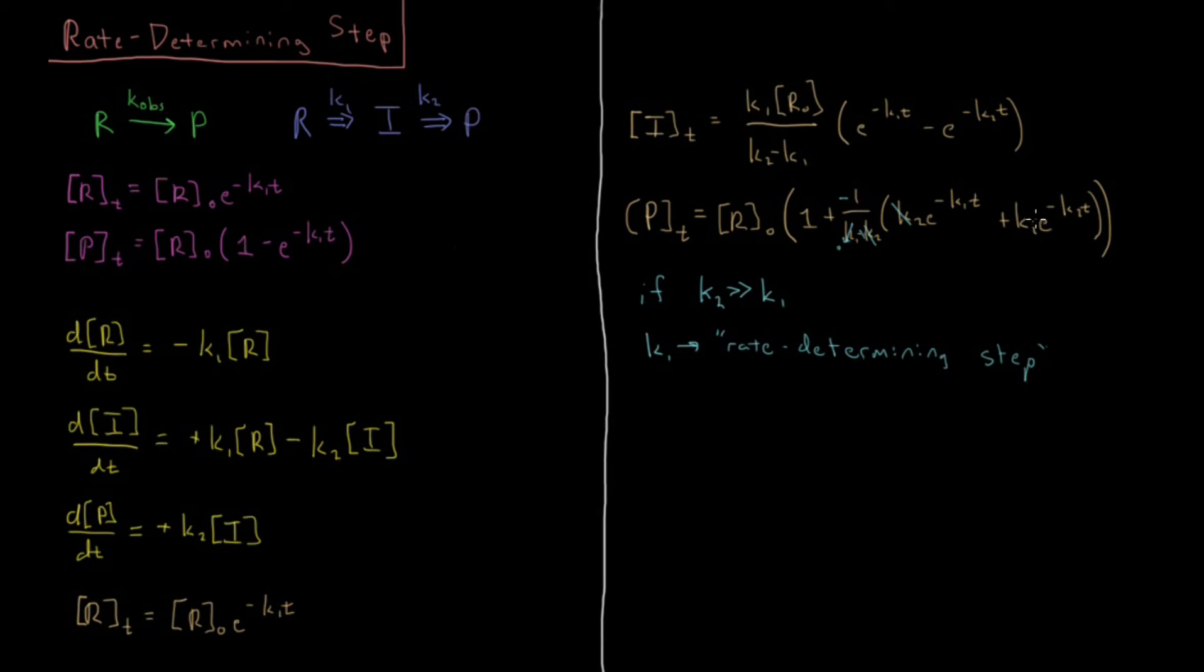And also, if you have the k1, this e to the minus k2t, that's going to go to one very, very quickly. Because it's going to be e to the minus a very large number, which is one over e to the very large number. So that's all going to go to one. But that's also kind of irrelevant because we're going to have one times k1, which is going to be very small once it was divided by k2 here. So you're going to have a k1 divided by a k2. So this whole term is going to go to zero.